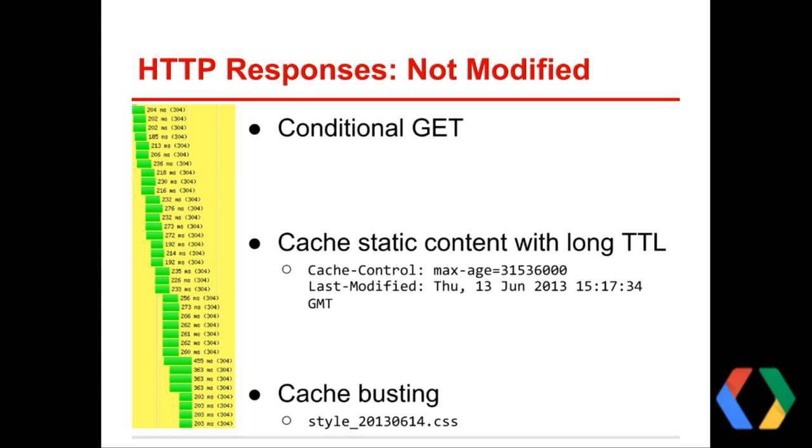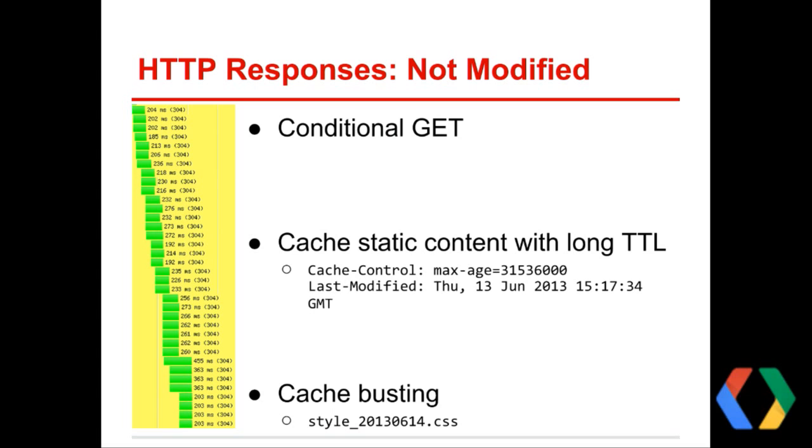When cache-control is used in conjunction with last-modified, we have two bits of information: we know the last time the resource was touched, and we know it should be served from cache for the next year. Some people get nervous when they see this, because they might think: if it's cached for a year, what if I want to make a change tomorrow? How will I ensure they don't just have old, outdated information? This could be serious if you're making a security patch. So there's a technique known as cache busting.